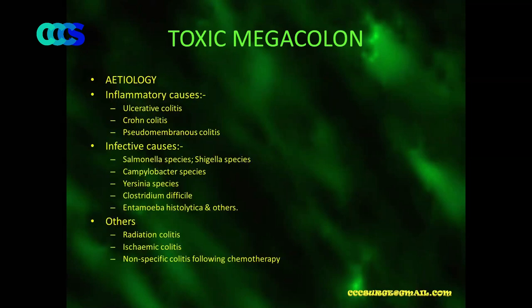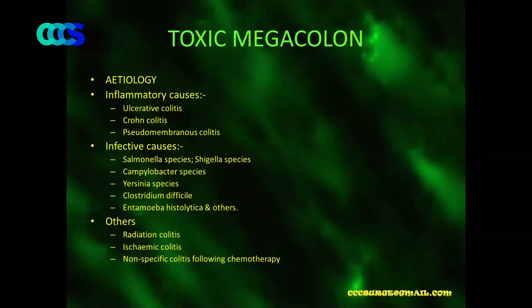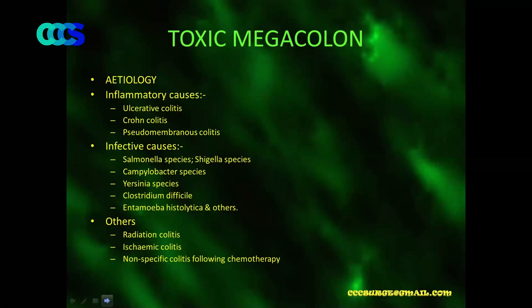Pathophysiology involves transmural inflammation, a huge amount of nitric oxide synthase — nitric oxide being one of the strongest inhibitors of smooth muscle, causing dilatation — and neural invasion of the muscular layer with damage. Etiology includes inflammatory causes: ulcerative colitis, Crohn's colitis (which has a high incidence of toxic megacolon before fibrosis establishes), seromembranous colitis especially in patients given loperamide (Lomotil/Imodium). Infective causes include Salmonella, Shigella, Campylobacter, Yersinia, and Clostridium difficile associated pseudomembranous enterocolitis. Other causes include radiation colitis, ischemic colitis, and non-specific colitis following chemotherapy.